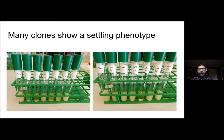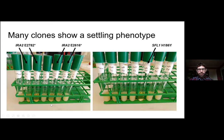We also see some other adhesion-related phenotypes like this settling phenotype in a bunch of replicates, where the yeast just settle straight to the bottom when you take the tubes out of a roller drum. These have mutations that are pretty well characterized — IRA2 is a known regulator and SFL1 is downstream of IRA2, so that one makes sense. There's some fun variation in these phenotypes, including one that's like a snow globe with just one giant chunk at the end.